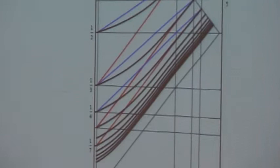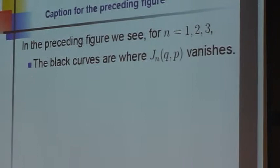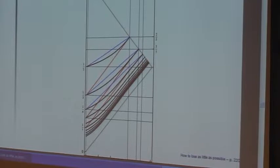So the black curves are the places where the indicator function is zero. And we're looking at the p-q plane, the two probabilities. The blue lines are a certain family of straight lines and the red lines are a certain other family of straight lines in the p-q plane.